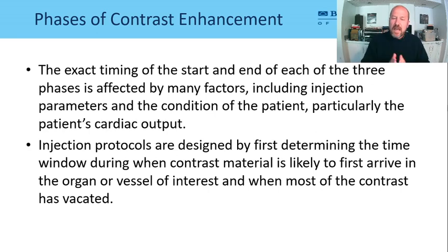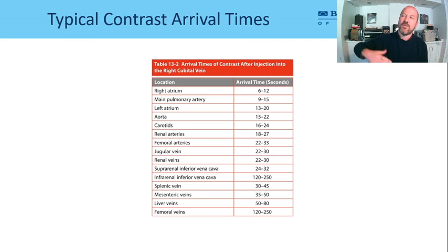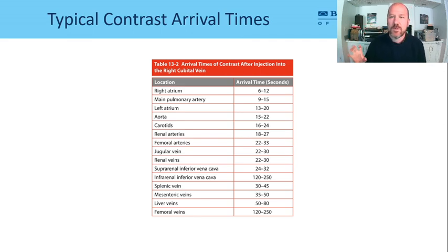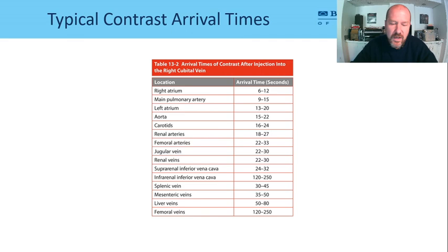Knowing the timing of each phase matters for injection protocols. Contrast arrival times from start of injection: right atrium is about 6–12 seconds; pulmonary artery (sweet spot for CTA chest/pulmonary embolism) is about 9–15 seconds; jugular veins and renal veins about 30 seconds; splenic vein about 30–45 seconds; femoral veins for a runoff study about 2 minutes. These assume an injection rate of roughly 3–4 ml/second.